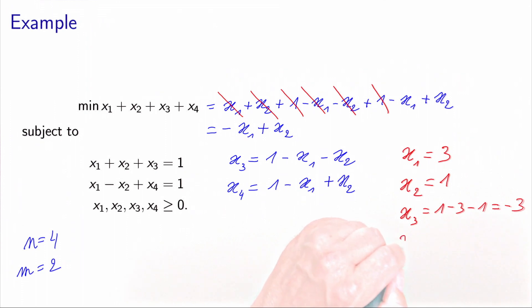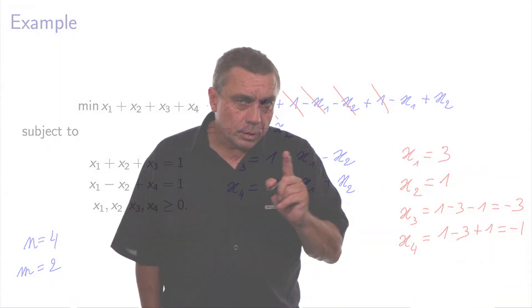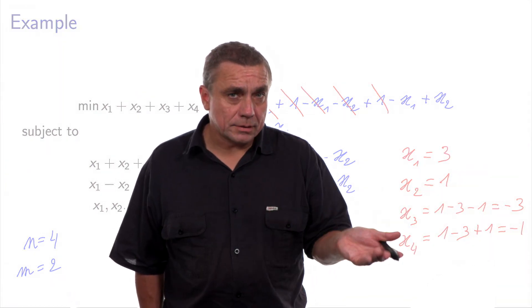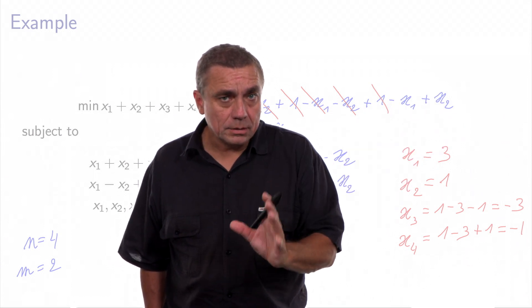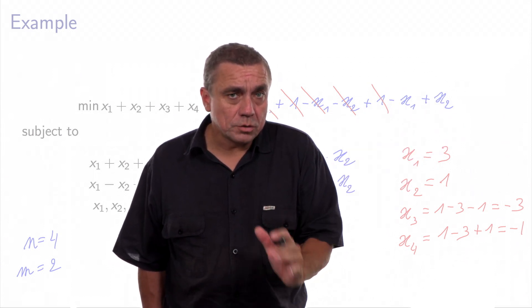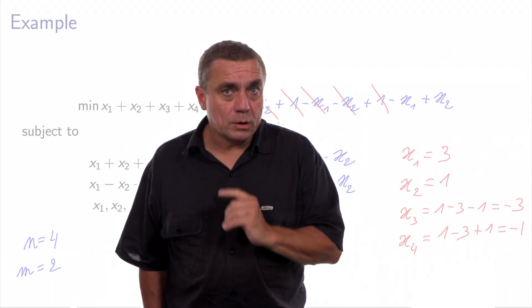And actually in this example, calculating x4 also leads to an infeasible value, because we have 1 minus 3 plus 1, which is equal to minus 1. So we can use the equality constraints to eliminate some variables and simplify the problem. But we should not forget the original formulation, because this does not eliminate the inequality constraints.